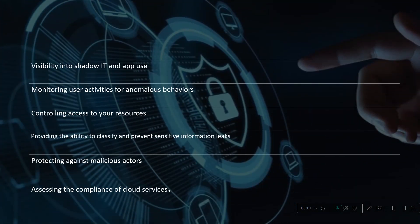CASB addresses cloud service risk by enforcing your enterprise security policies. This is done by providing visibility into shadow IT and app use, monitoring user activities for anomalous behavior, controlling access to your resources, providing the ability to classify and prevent sensitive information leaks, protecting against malicious actors, and assessing the compliance of cloud services.